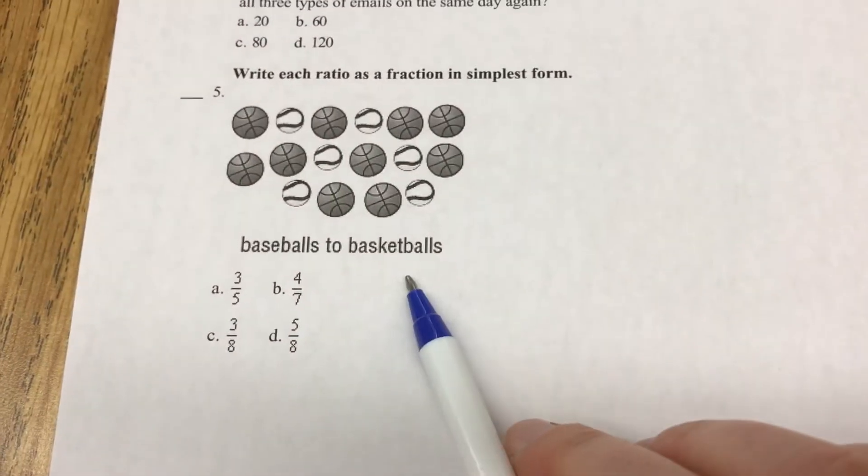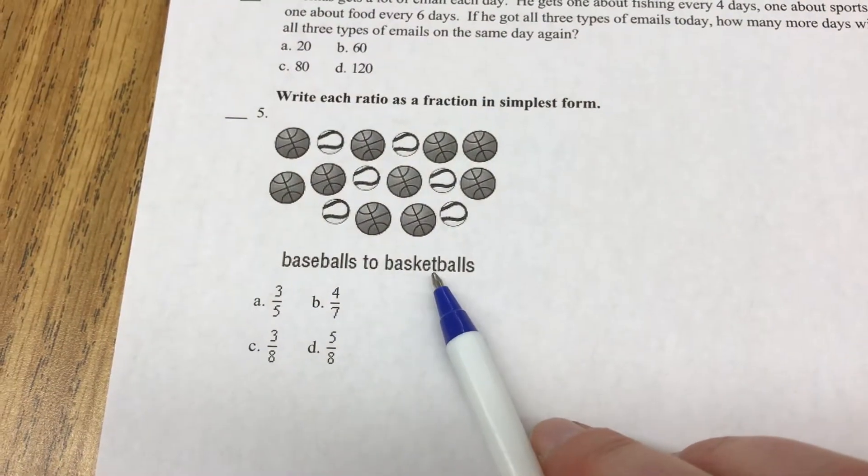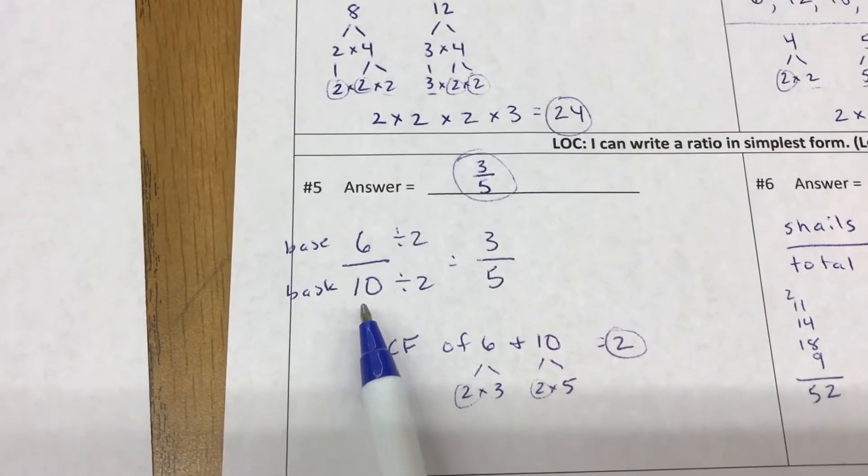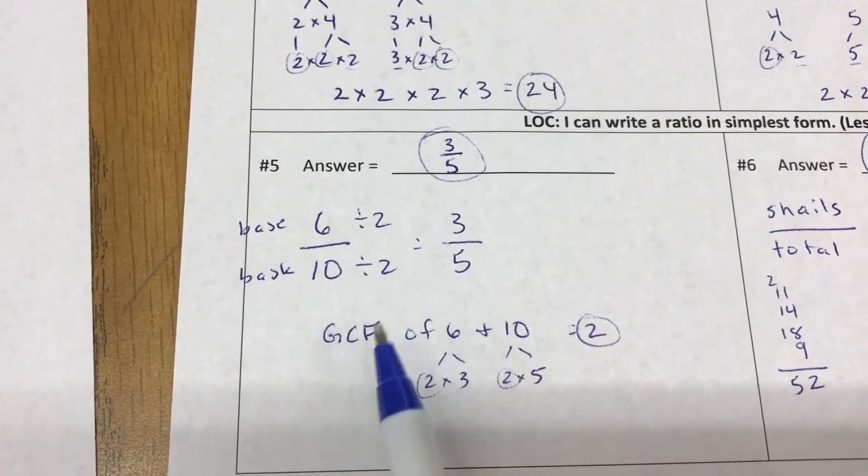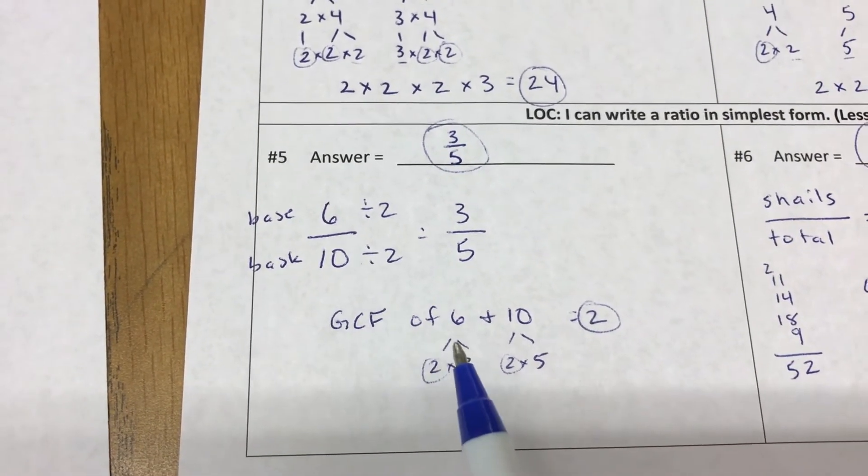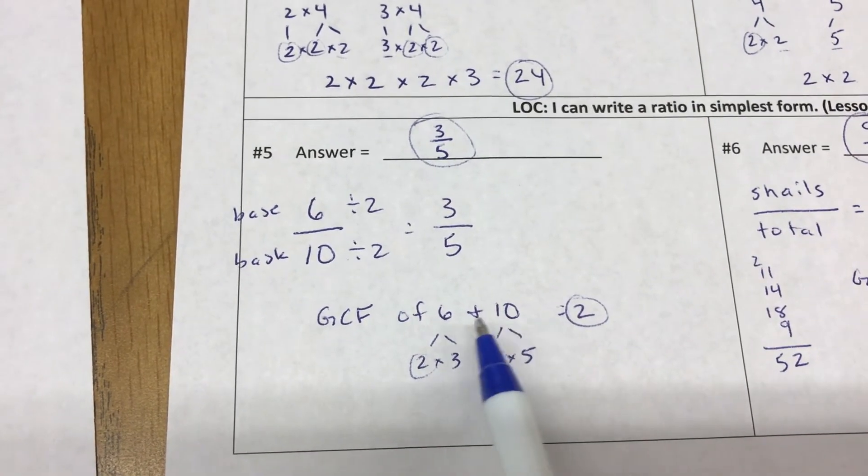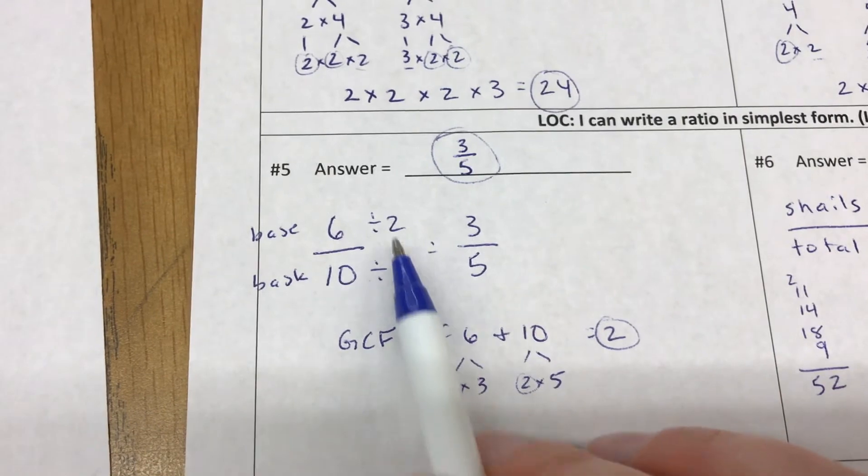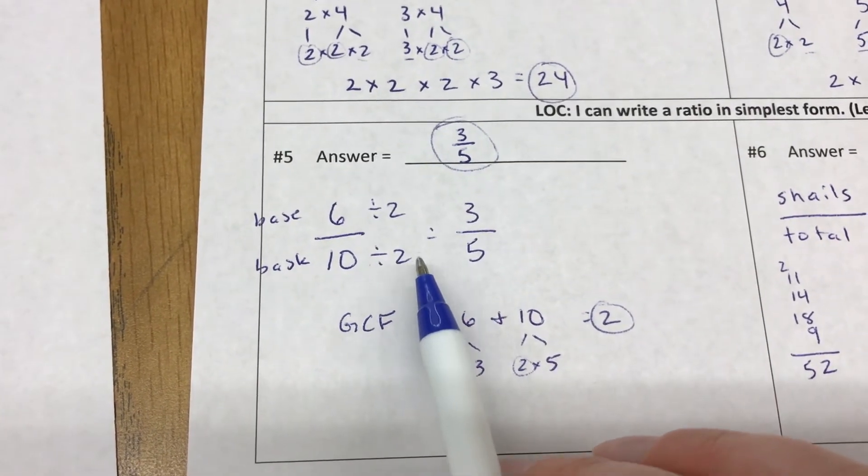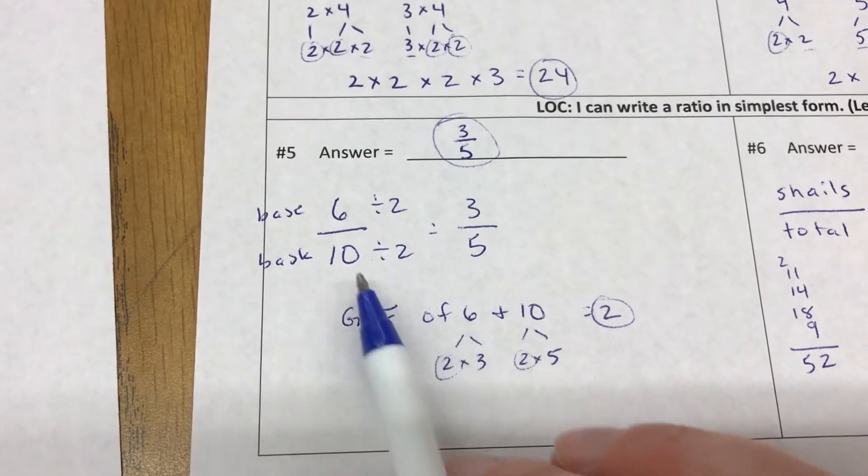Moving on to writing ratios in simplest form: we had baseballs to basketballs. When you count them up, you have 6 baseballs to 10 basketballs, and you need to divide by the greatest common factor because you can't just divide both by 6. The greatest common factor of 6 and 10—I did a tree here—is 2. Whatever you do to the numerator, you have to do to the denominator. So 6 divided by 2 is 3, 10 divided by 2 is 5. Three-fifths is our ratio.